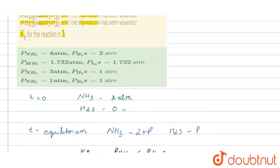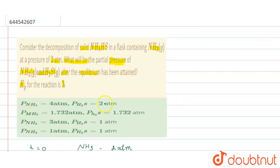Let us see the options. First option is wrong. Second option is also wrong. The third option is correct. For ammonia, it is 3 atmospheres, and for hydrogen sulfide, it is 1 atmosphere. This is the answer.